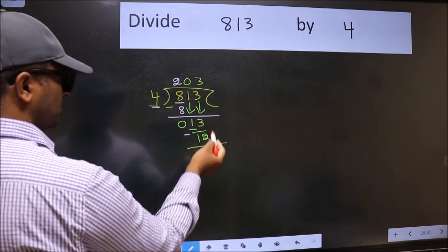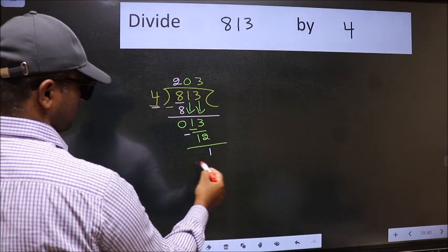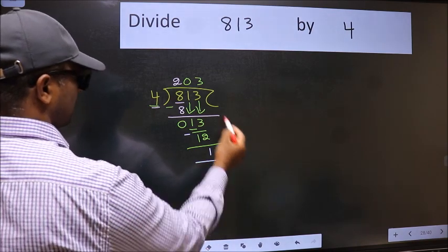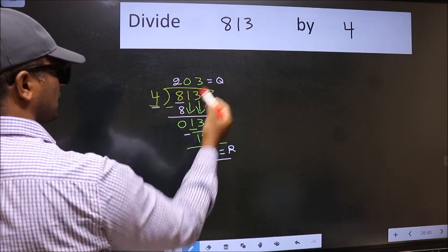No more numbers to bring it down. So we stop here. This is our remainder and this is our quotient.